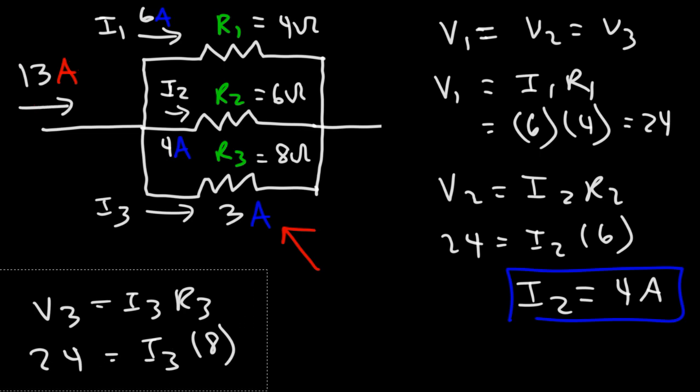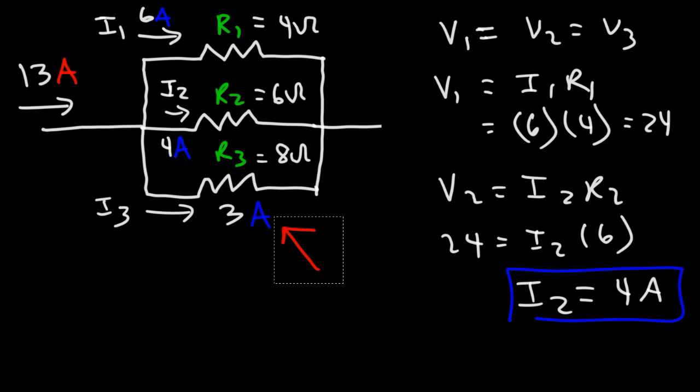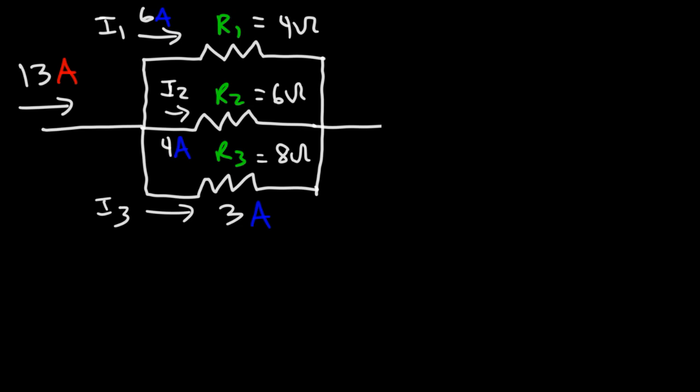So we really didn't need to use Ohm's law once we had the first two currents in order to calculate the value of the third current. So that's how you can solve this particular circuit. It's helpful if you know that formula, but let's talk about how we can derive that formula.